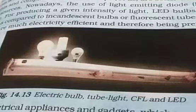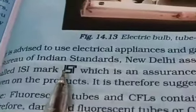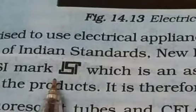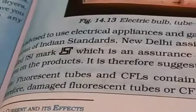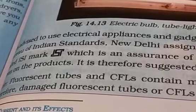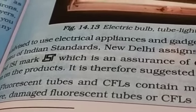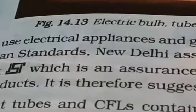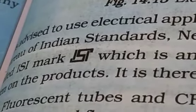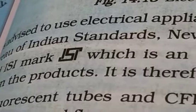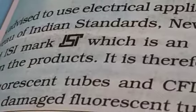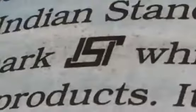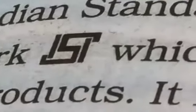One more thing you have to remember, before taking any bulb, we have to check for the ISI mark. This is the ISI mark, means Indian standard. It is advised to use electrical appliances and gadgets which are electricity efficient, where the electricity is not wasted and which is not harmful. Bureau of Indian Standard, New Delhi assigns a standard mark on the products called ISI mark, which is an assurance of conformity to the specification given on the products. It is therefore suggested to use ISI mark products only.